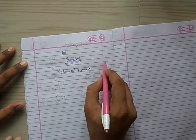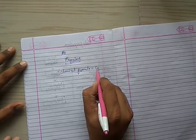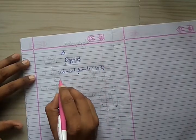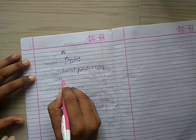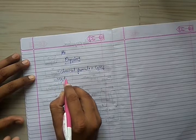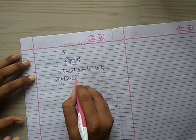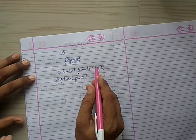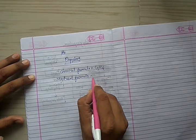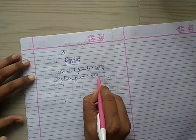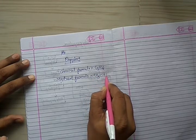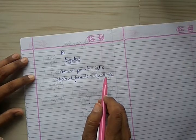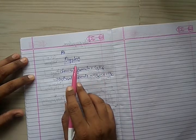The chemical formula of propylene is C3H6. The structural formula of propylene is CH3 single bond CH double bond CH2. This is the structural formula of propylene.